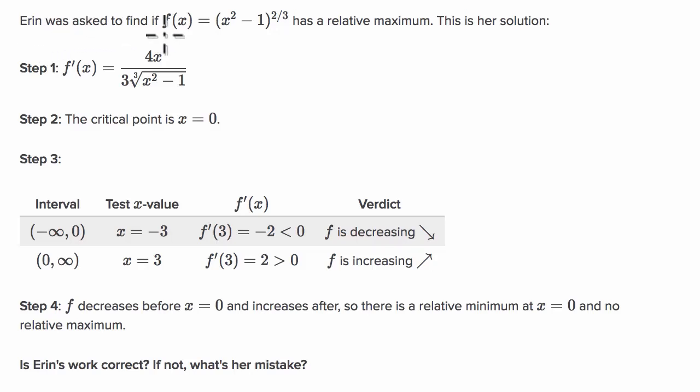Erin was asked to find if f of x equals x squared minus one to the two-thirds power has a relative maximum. This is her solution, and then they give us her steps. At the end they say, is Erin's work correct? If not, what's her mistake?